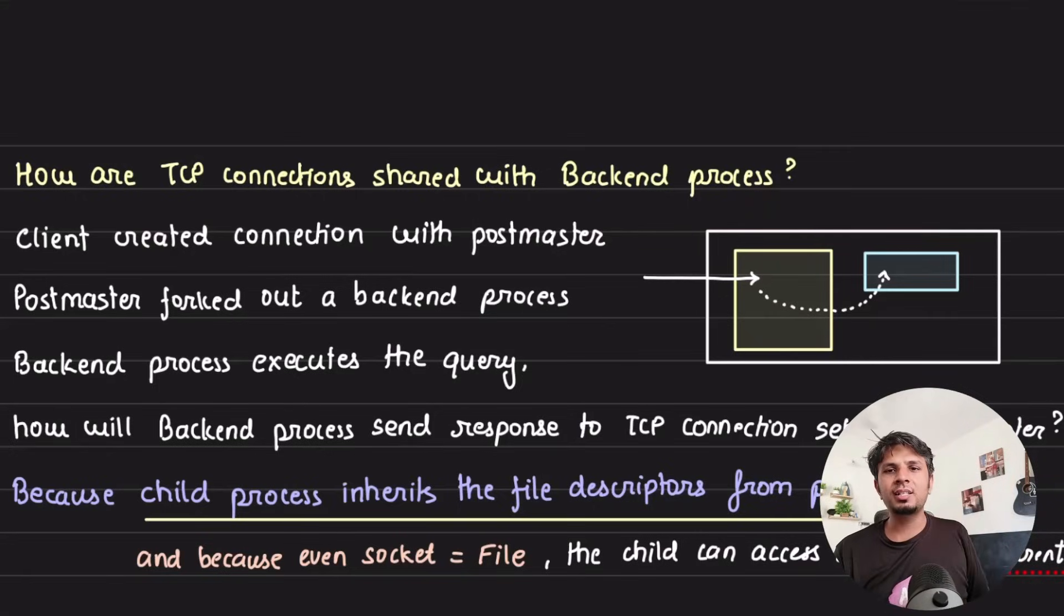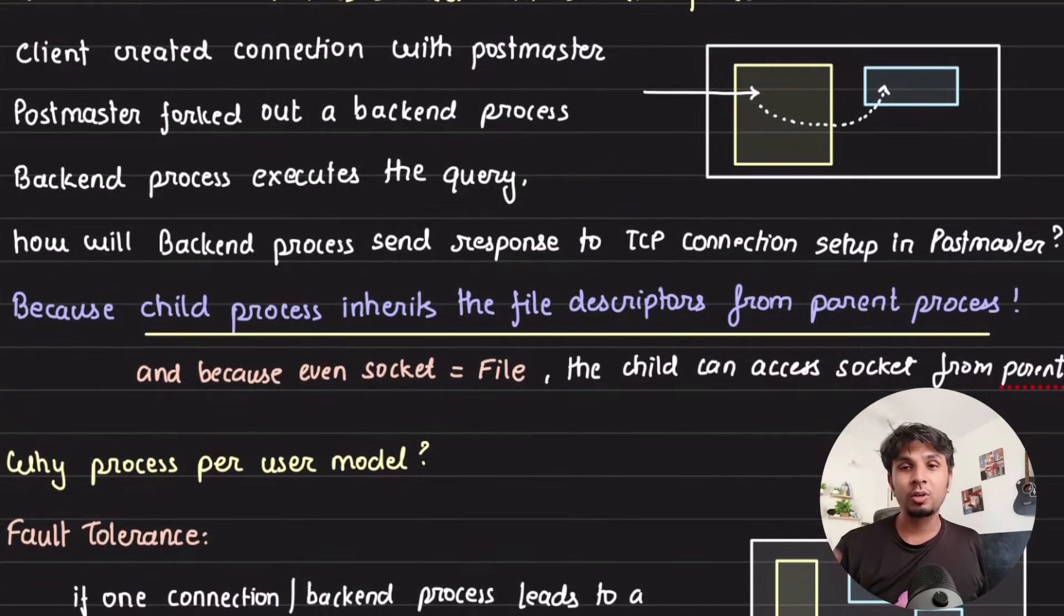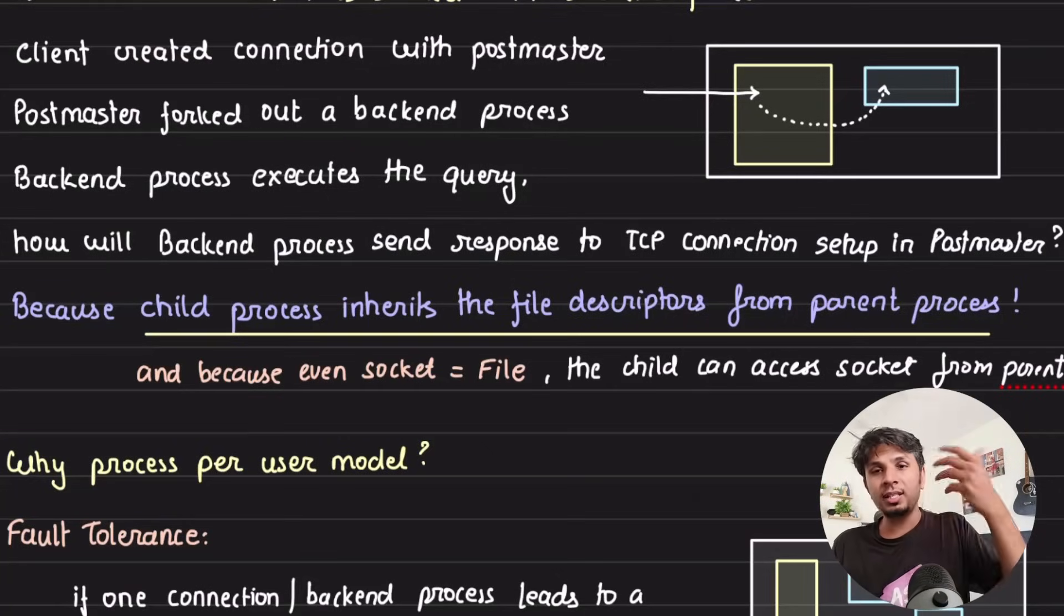This is where a bit of OS internals or a bit of OS specifics kick in. So whenever a child process is forked, what actually happens is your child process inherits the file descriptors from the parent. Now here, because everything is a file, even socket is a file, which means it has a file descriptor. When you fork out a child process, it inherits the file descriptor of the parent.